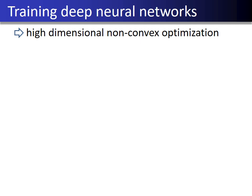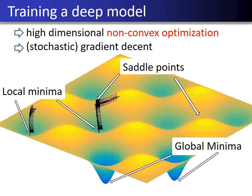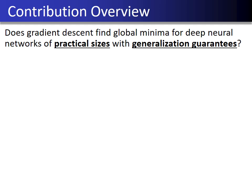Training a deep model is usually done via high-dimensional non-convex optimization. In order to scale for high dimensionality, we usually have to use local greedy algorithms such as gradient descent or its variants. Because of the non-convexity, local greedy algorithms can potentially get stuck near a locally optimal solution or be attracted to a saddle point, as illustrated in this figure. So an important question is: does gradient descent find global minima for deep neural networks of practical sizes with generalization guarantees?